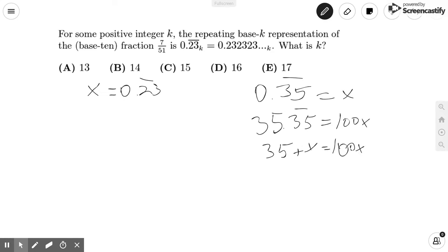And then from here, we would be able to subtract x on both sides and get how x is equal to 35 over 99.